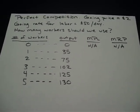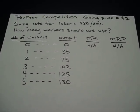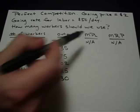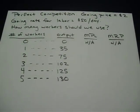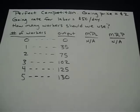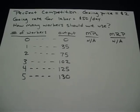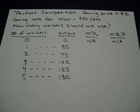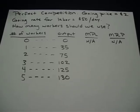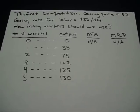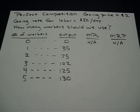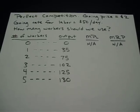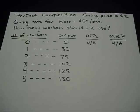Here we want to look at marginal product of labor and marginal revenue product — you'll see them abbreviated as MPL and MRP. The situation is a perfectly competitive market. The going price for the product is $2, and the going rate for labor is $50 — so perhaps that's a perfectly competitive labor market as well. How many workers should we use? This is a common AP microeconomics question.